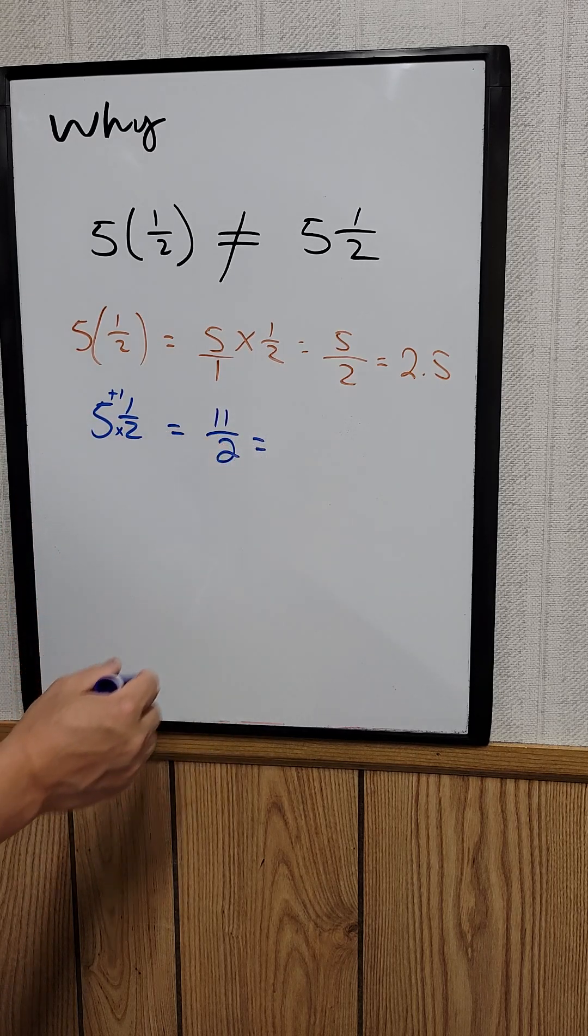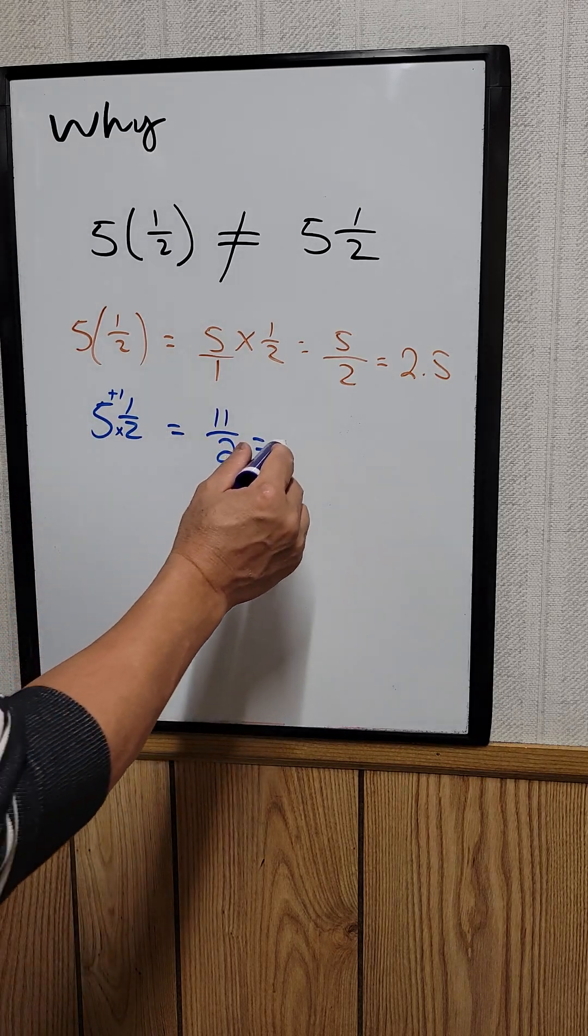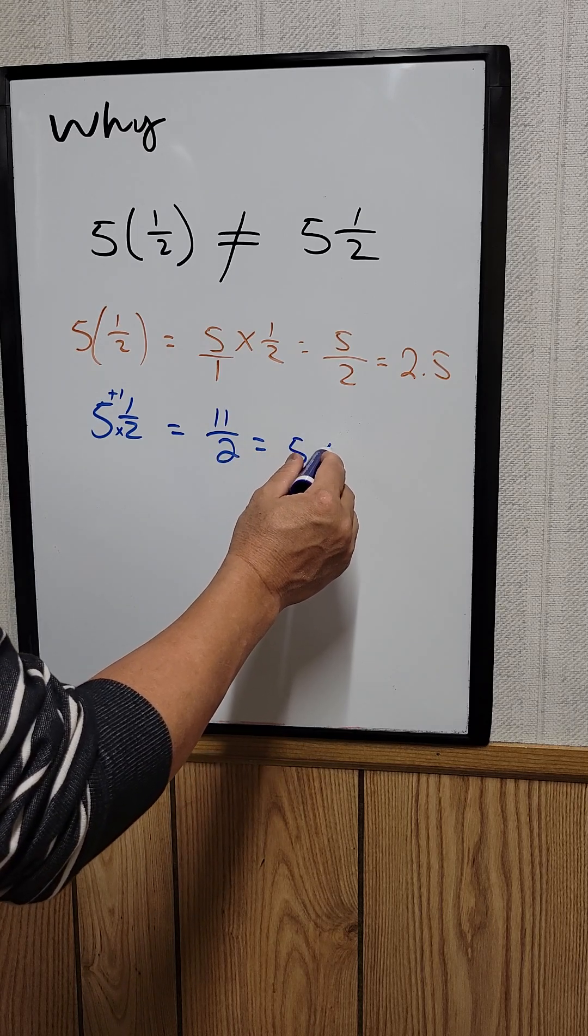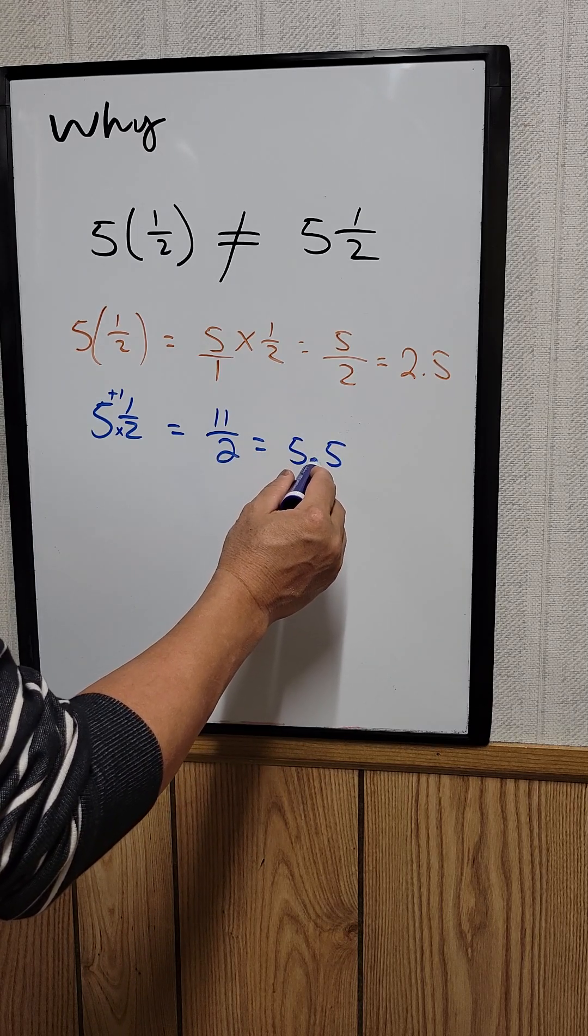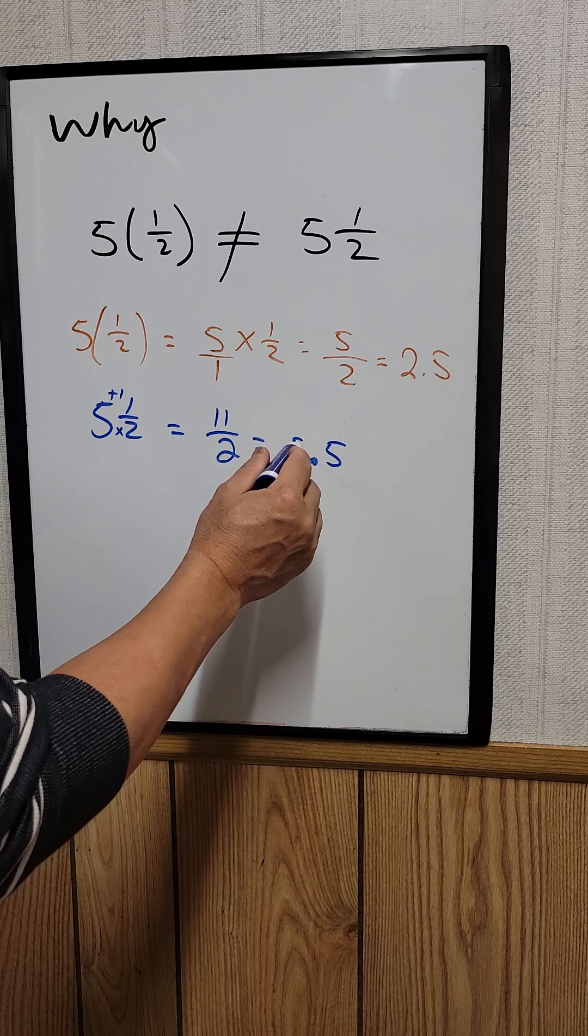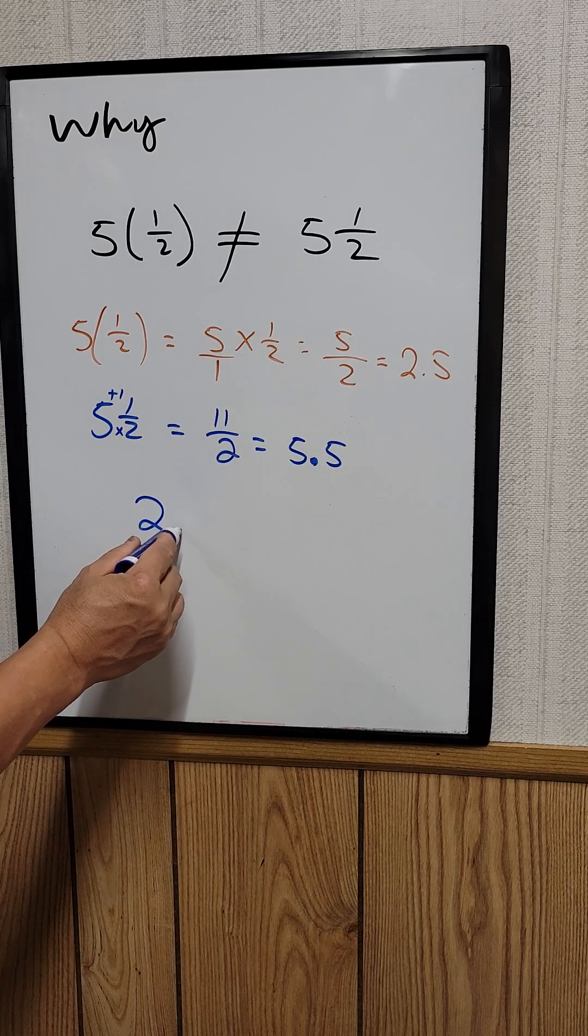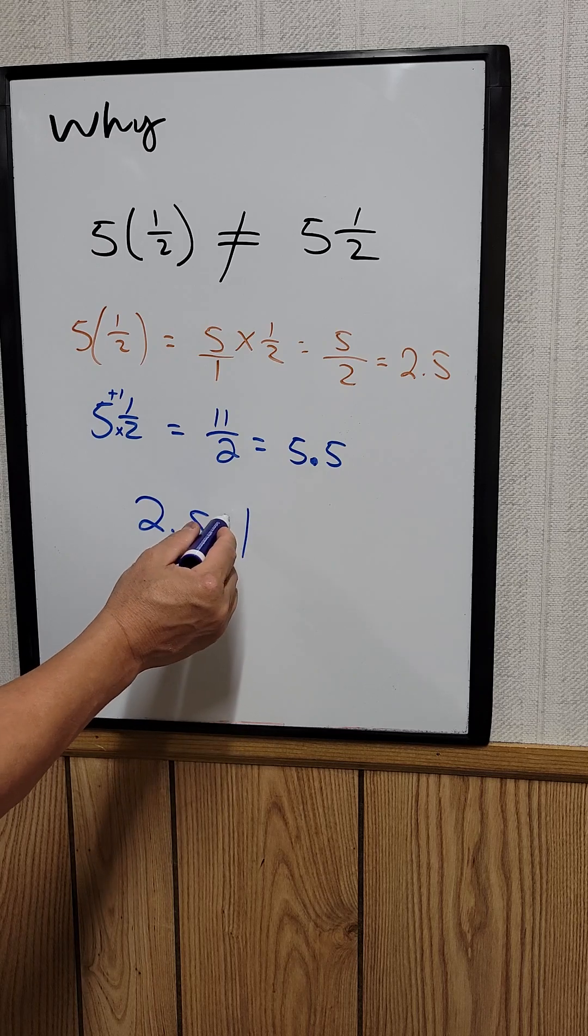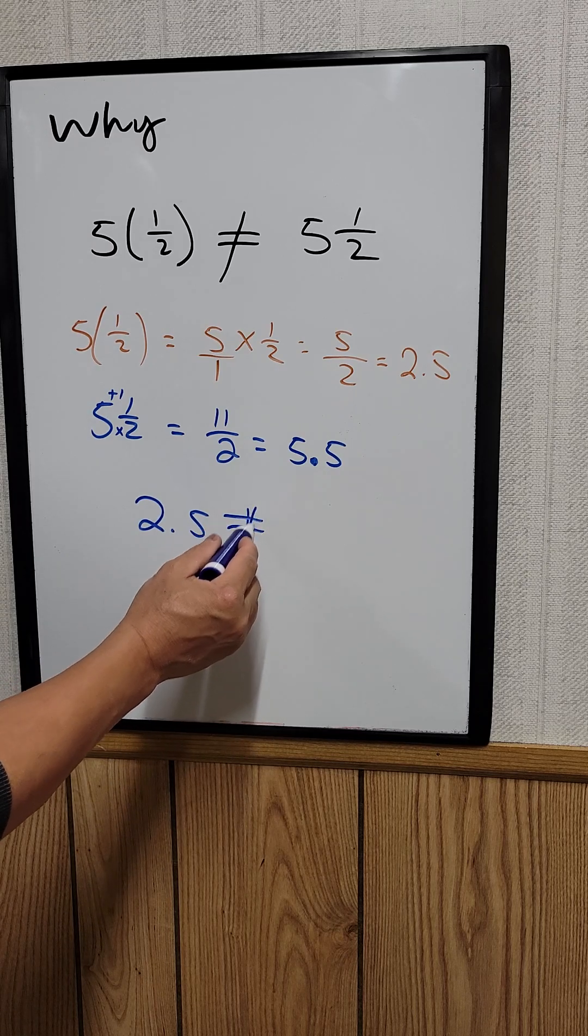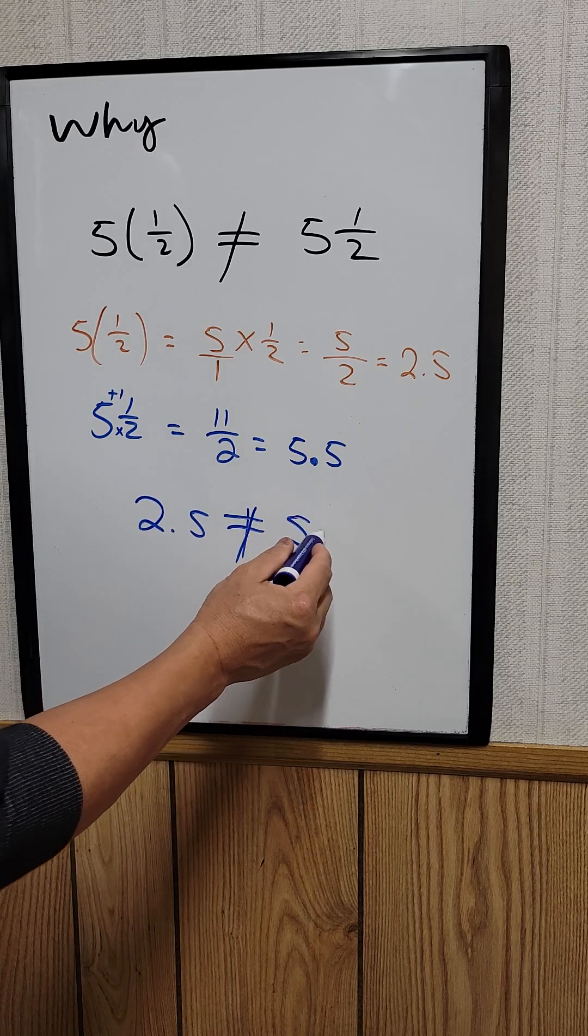So what's 11 over 2? It equals 5.5. As you can see, 2.5 is not equal to 5.5.